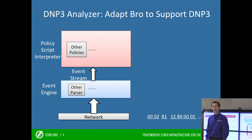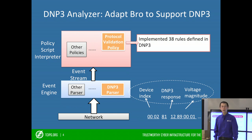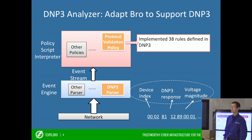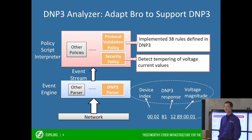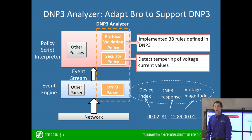In this slide, I've described how we integrate a DNP3 analyzer into Bro. Bro contains two components: the event engine and the policy script interpreter. We integrate a DNP3 parser into the event engine, so Bro can decode the raw byte stream from the DNP3 network traffic into meaningful data fields. Then we can define different policies to analyze this data. For example, we included a protocol validation policy to check that the format of each DNP3 network packet conforms to the protocol definitions, and to do that we implement 38 rules defined in DNP3. We can also include a security policy to detect malicious activities, such as in this demo where we define a policy to detect the tampering of voltage and current values. The DNP3 parser and the integrated policy together construct a DNP3 analyzer.